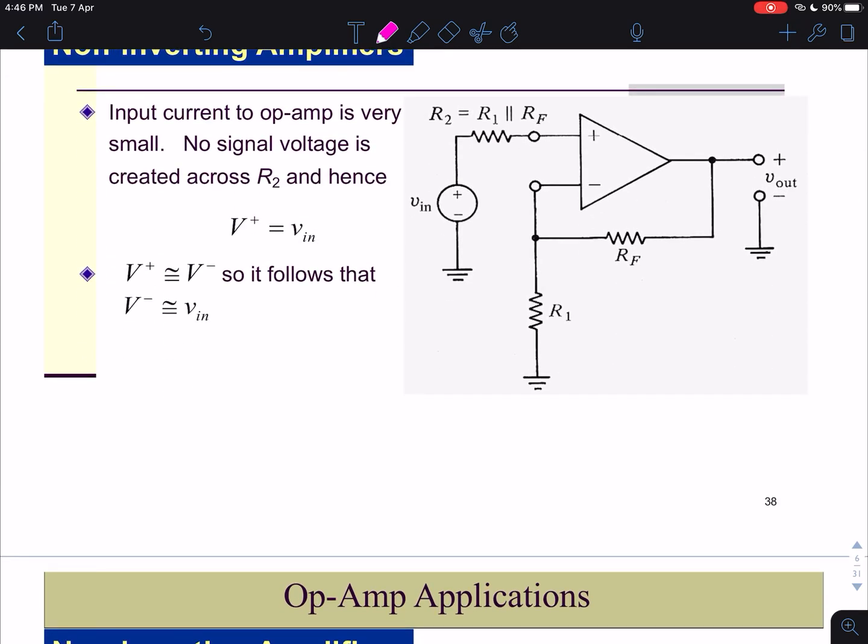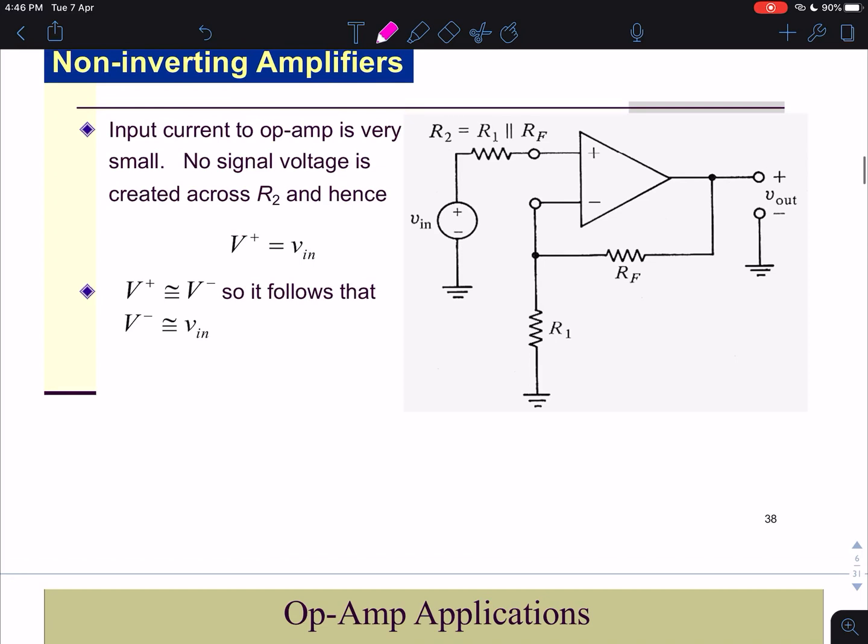The input current to the op-amp is very very small. Ideally the current does not flow into the op-amp. Thus there is no signal voltage created across R2 because using V equals IR.